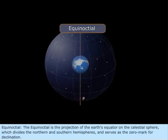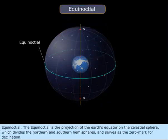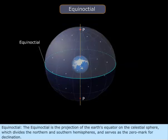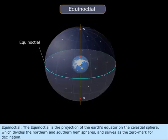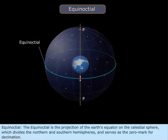Equinoctial. The equinoctial is the projection of the Earth's equator on the celestial sphere, which divides the northern and southern hemispheres and serves as the zero mark for declination.